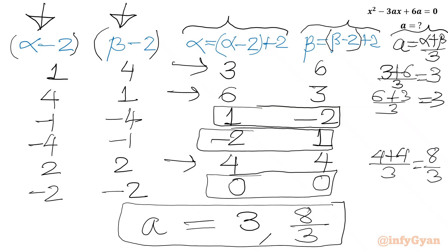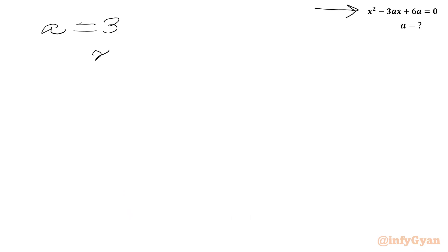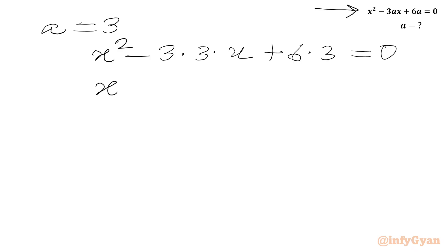For A = 3, the roots are 3 and 6. Plugging A = 3 into the quadratic equation gives x² - 9x + 18 = 0, which factors as (x - 3)(x - 6) = 0, confirming roots 3 and 6.